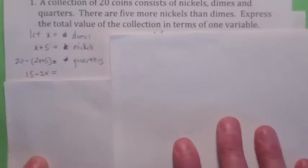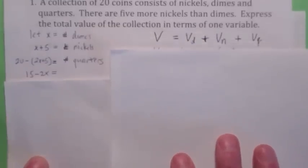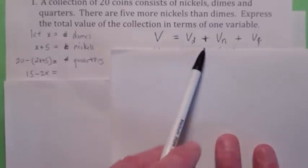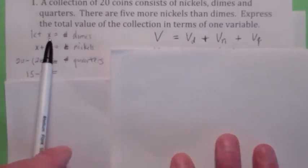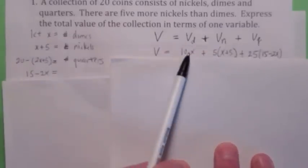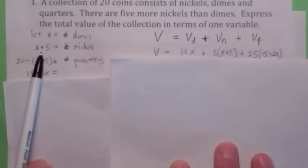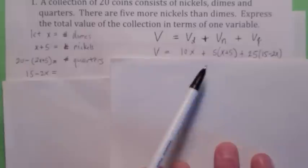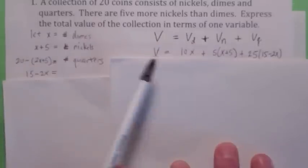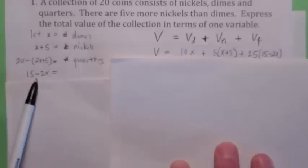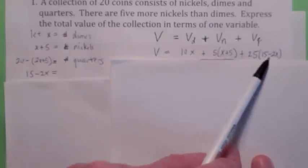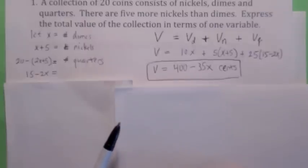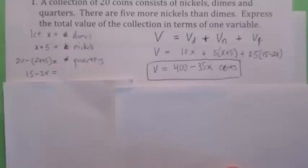Now we're ready to find the total value, which is the sum of the values of all coins. The value of dimes: if you have x of them at 10 cents each, that's 10x. The value of nickels: if you have x plus 5 of them at 5 cents each, that's 5 times the quantity x plus 5. The value of quarters: if you have 15 minus 2x of them at 25 cents each, the total simplifies to 400 minus 35x cents.